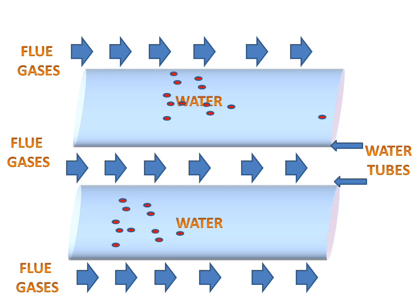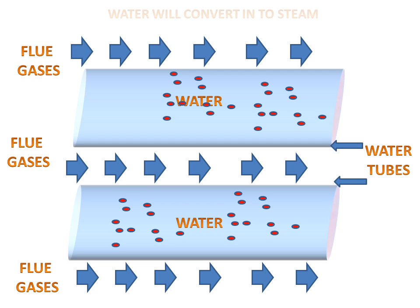So these are the basic principles of the water tube boiler and fire tube boiler. In fire tube boiler, fire tubes are used in which flue gases will travel and in water tube boiler, water will travel in between the tubes. So this is the main difference between fire tube and water tube boiler.